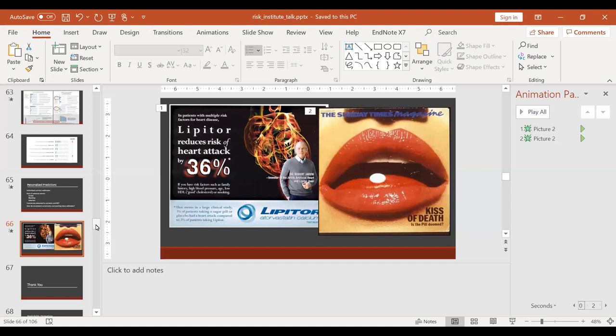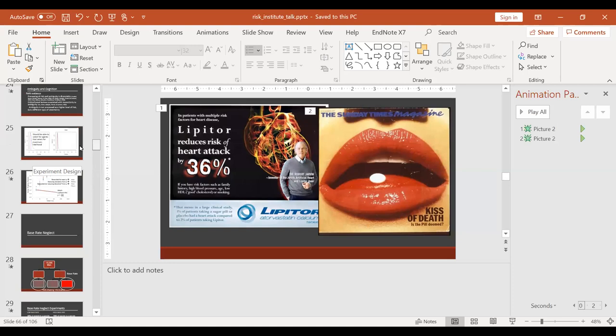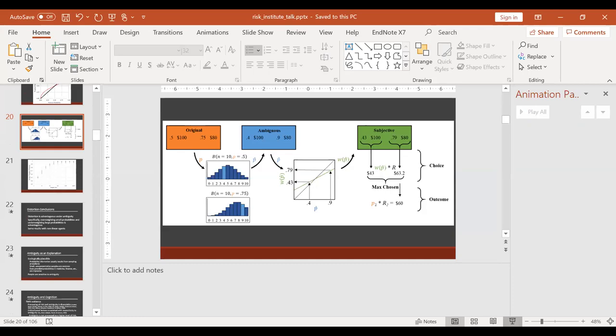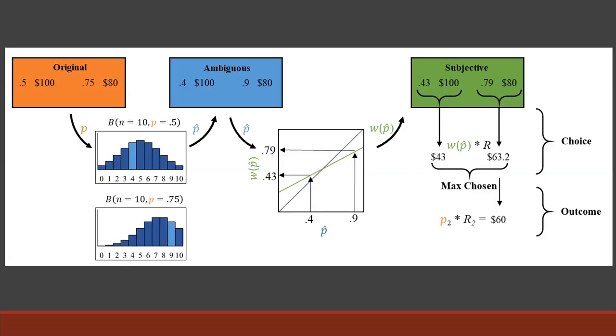Q&A: A question was raised about the rationale for choosing the binomial distribution specifically, or whether other distributions could be used for rescaling probabilities. The answer is that other distributions could be used — it's basically a placeholder for adding some uncertainty to the probability. The beta distribution was suggested as an alternative since it has support between zero and one, but that raises the question of what shape parameters to use for the beta distribution, which depends on the data and how uncertainty is characterized.